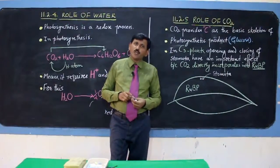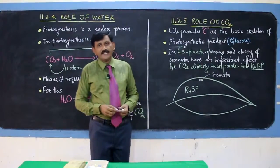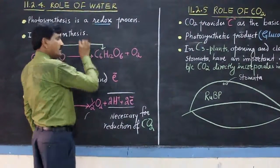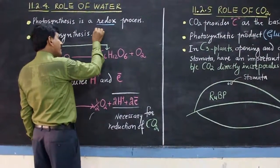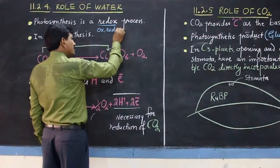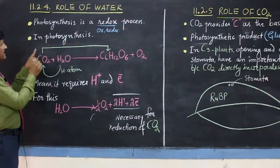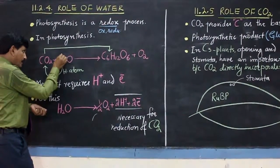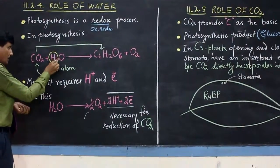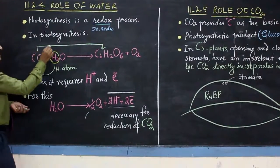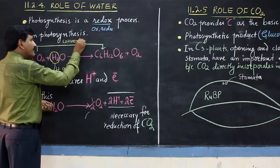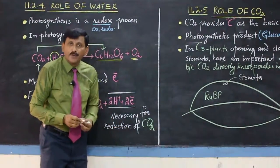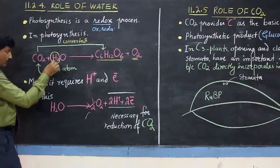Today our topic is the role of water in photosynthesis. Photosynthesis is a redox process — oxidation and reduction. In photosynthesis, carbon dioxide reacts with water, and water donates hydrogen atoms to carbon dioxide. Carbon dioxide is then converted to glucose, and oxygen is released as a by-product.